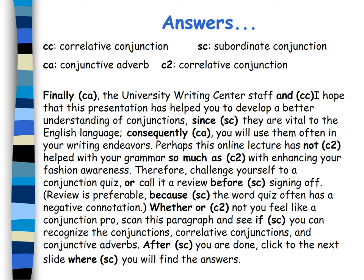Then we will find out: 'finally' is a conjunctive adverb (CA), 'and' is a coordinating conjunction (CC), 'since' is a subordinate conjunction (SC), 'consequently' is a conjunctive adverb (CA), 'not...so much as' is a correlative conjunction (CC), 'before' is a subordinate conjunction (SC), 'whether...or' is a correlative conjunction (CC), 'if' is a subordinate conjunction (SC), 'after' is a subordinate conjunction (SC), and 'where' is a subordinate conjunction (SC).